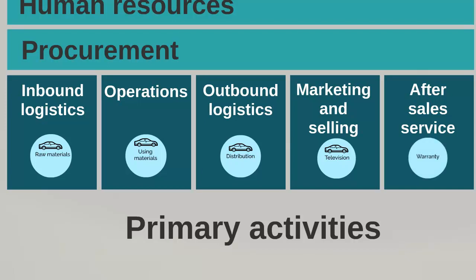After-sales service would be things like warranties. A lot of car manufacturers offer three-year or up to 100,000-mile warranties, which gives you confidence as a consumer. Because you know that if anything goes wrong within that timeline or mileage, it will be fixed. You're willing to pay extra — perhaps an additional £500 or £1,000 — onto the selling price of that car because of that after-sales service.